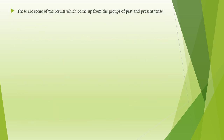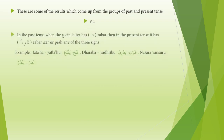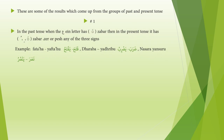These are some results which come from the groups of past and present tense. Rule one: in the past tense, when the 'ain letter has zhabar, then in the present tense it may have zhabar, zayr, or pejh — any of the three signs. Examples: fataha/yaftahu, daraba/yadribu, nasara/yansuru.